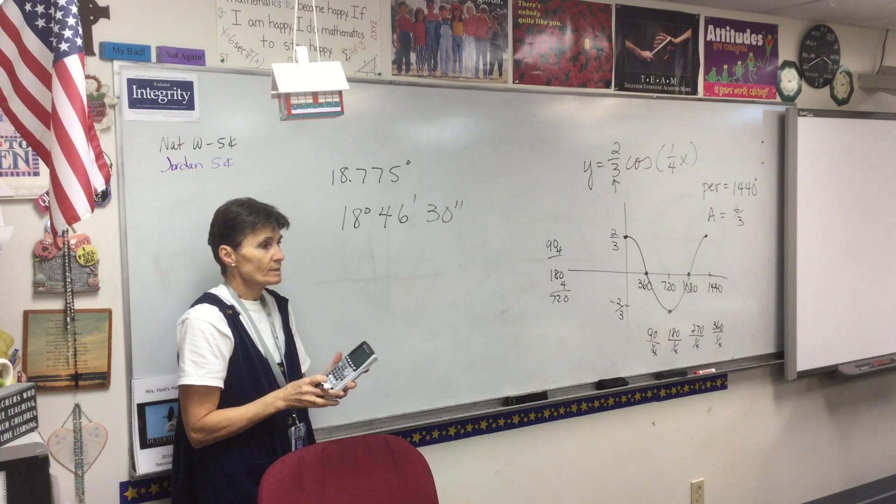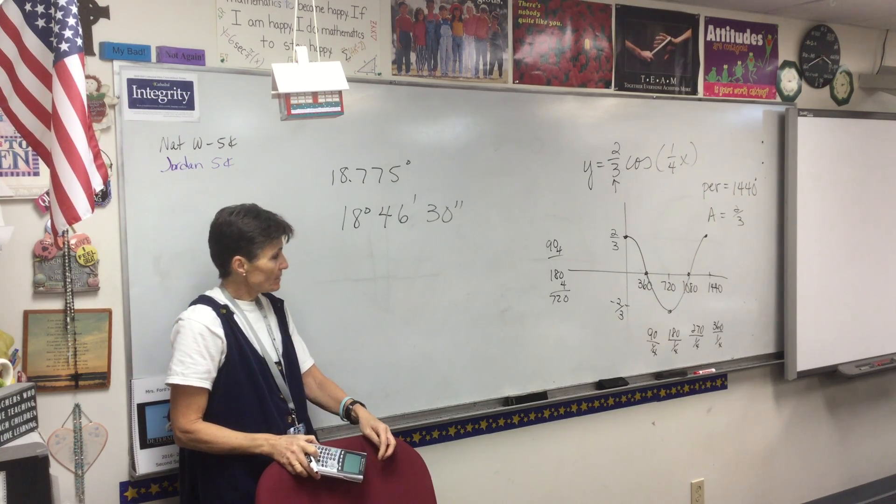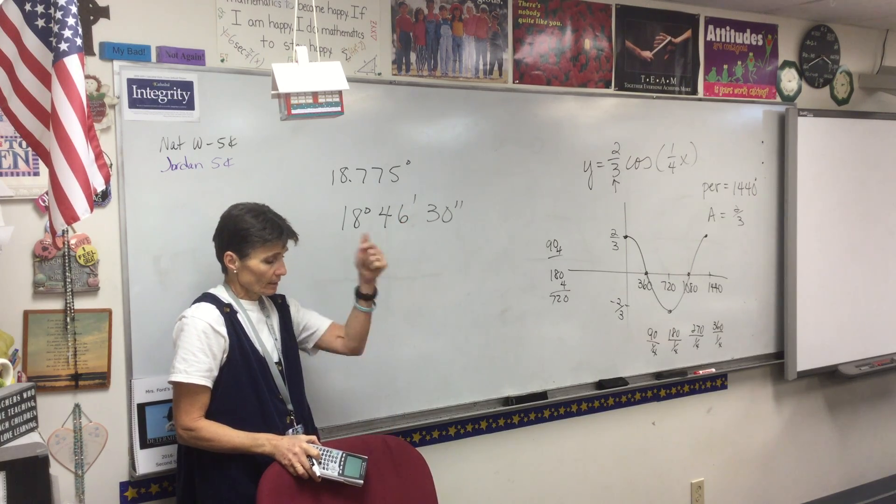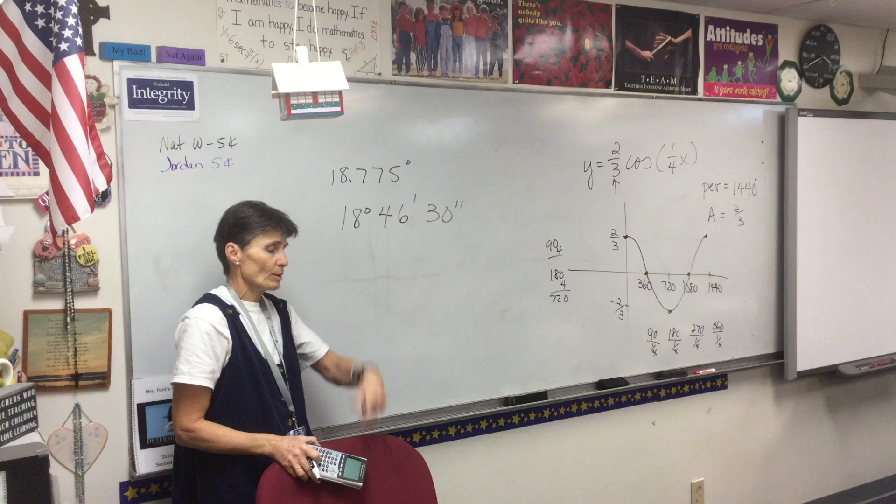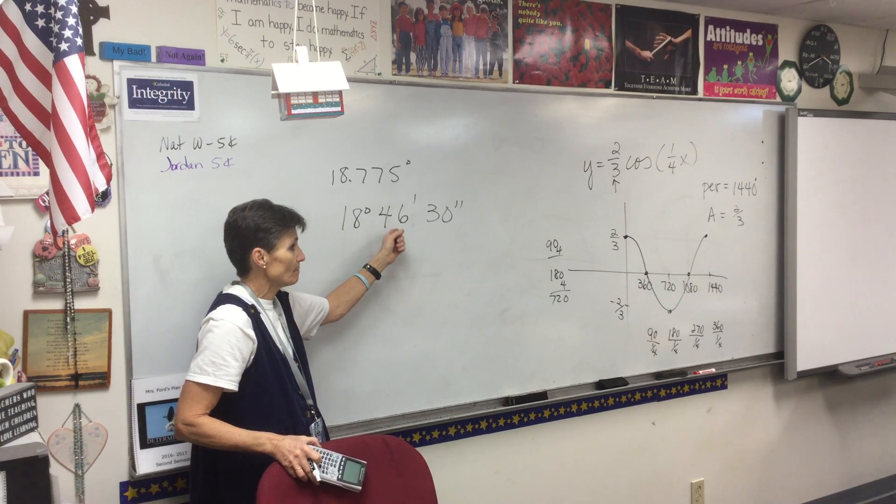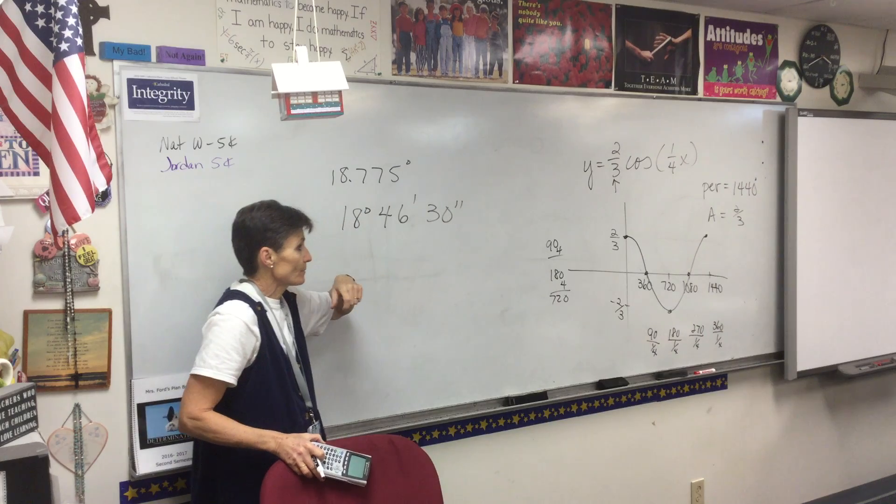So one more time, it's super simple. You type in your decimal, go into second angle, click down to DMS, press enter a couple times, and it comes up with degrees, minutes, seconds, DMS.